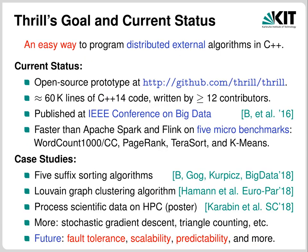As for the current status of Thrill: we have a well-working implementation which I still consider a prototype, because the interface can change between releases. It has about 60,000 lines of relatively advanced C++ code written by more than two dozen developers over three years. We published a paper on Thrill in 2016 at IEEE Big Data in Washington DC, a paper on distributed suffix array construction in 2018 at IEEE Big Data in Seattle, and a paper on Louvain graph clustering at EuroPar 2018. There are many more examples in the repository including gradient descent and triangle counting.